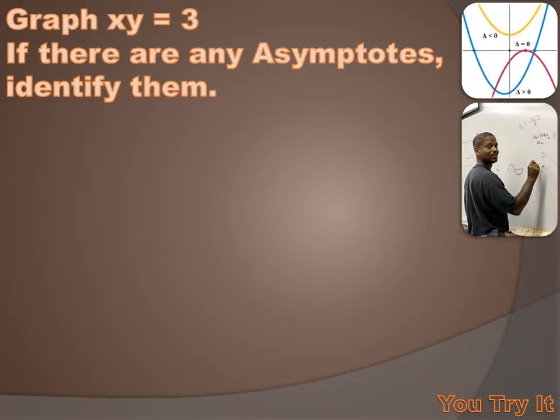Okay, it's time for you to try one. Graph xy equals 3. And if there are any asymptotes, identify them. Hmm, what kind of variation is xy equals 3? You know, I don't think that that's in standard form. Oh well. You figure it out. You hit your pause button. Solve the problem. And then hit your forward key to move on to my solution.